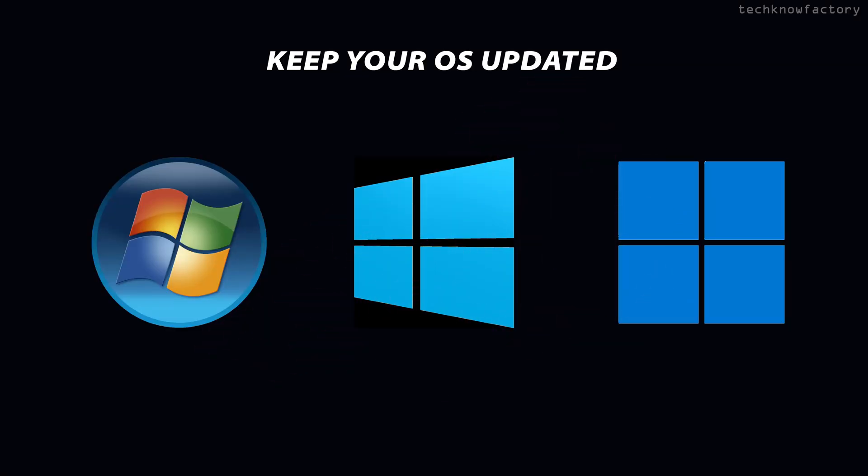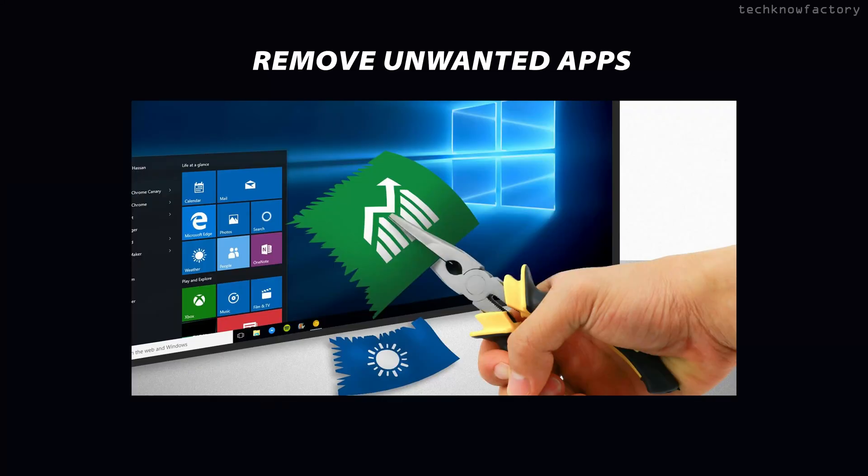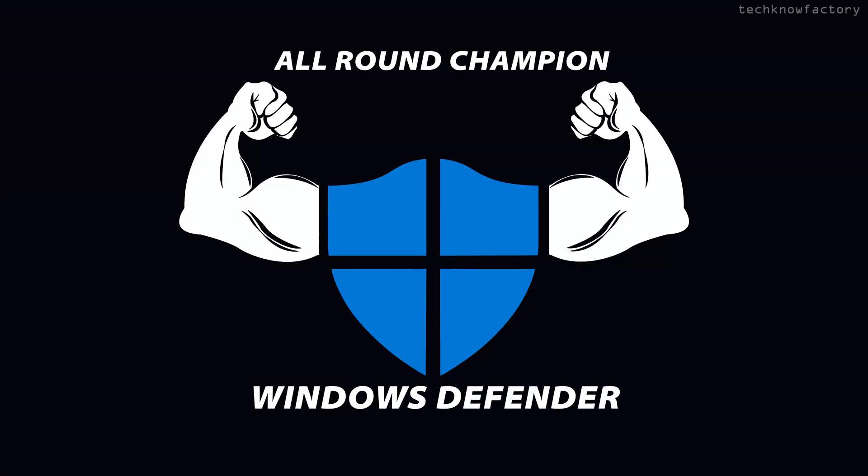Importantly, keep your operating system updated to the latest stable version. Updates improve system stability, system security, system performance, and battery performance, and fix various crashes and bugs. Also, remove any third-party antivirus software — just uninstall them. In Windows 10 and later, the built-in Windows Defender is the best option. I personally no longer use any third-party antivirus and trust Windows Defender, as long as it is kept updated.